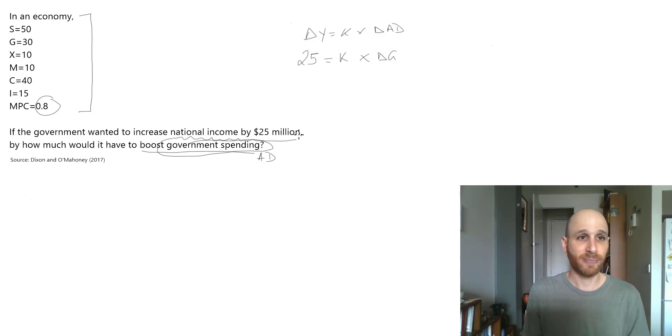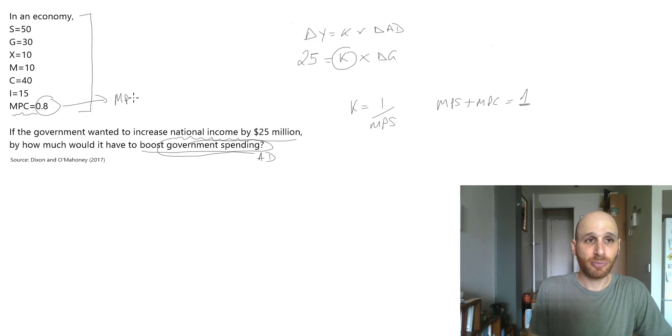Now we need to find our mystery part which is k. We know that k equals 1 over MPS. This is why it's really good to always put down our formulas. We also know that MPS plus MPC equals 1. So if MPC equals 0.8, this means that our marginal propensity to save equals 0.2.